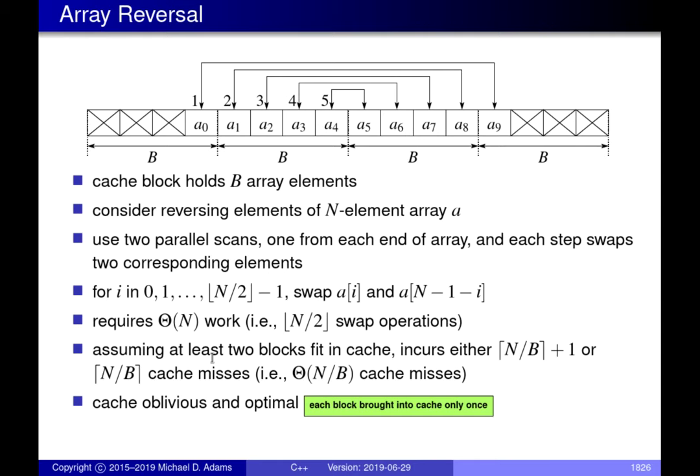This particular algorithm is obviously cache oblivious because there's nowhere we're exploiting cache parameters. It's also optimal because the best we can hope for is approximately n over b cache misses — we bring each block that holds data into the cache once and only once, which is the best we can do assuming the cache is cold to begin with.